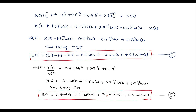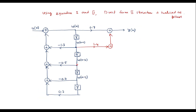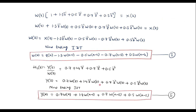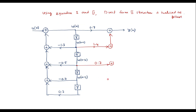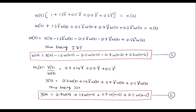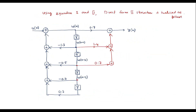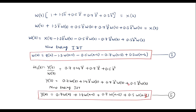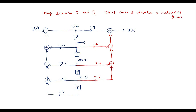Then we have 0.7 w(n−2); the w(n−2) signal is available from the second delay element, with multiplication factor 0.7 connected to the adder. Next, 0.5 w(n−3); w(n−3) is available from the third delay element, with multiplication factor 0.5 connected to the adder. This completes the direct form 2 structure. Thank you for watching.